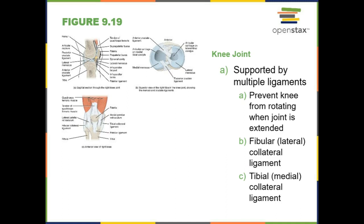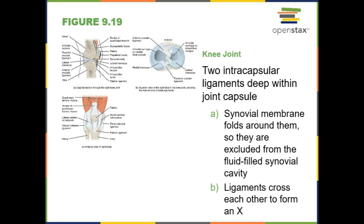The lateral ligament is also known as the fibular collateral ligament, and the medial ligament is known as the tibial collateral ligament — you've probably heard of the LCL or the MCL. Those are the two ligaments that protect the knee joint on the medial and lateral aspects. We also have two intracapsular ligaments — the anterior cruciate and posterior cruciate — that protect the knee anteriorly and posteriorly, keeping the femur stabilized and preventing it from moving back or too far forward off the tibia.